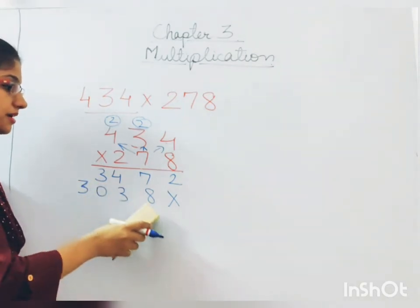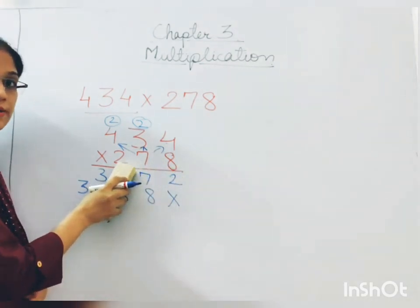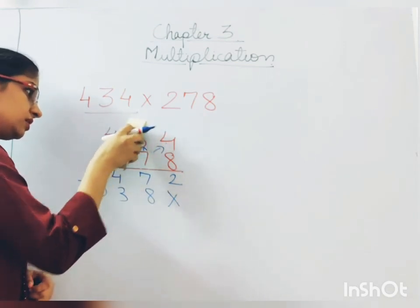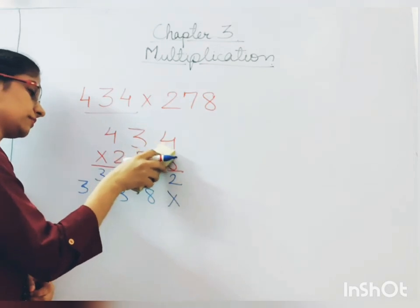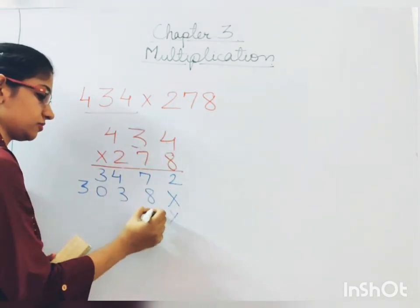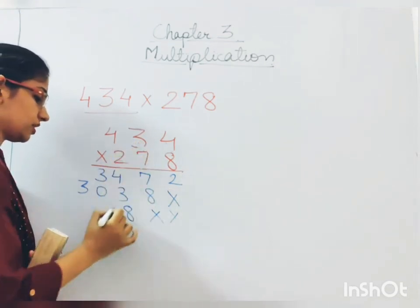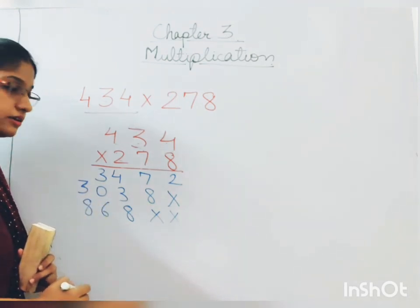Done. Done. Now you are done multiplication with 8 and 7. Now we have to do multiplication with 2. So erase the previous carryovers. Erase the arrows. And start again. So 2 4s are. 2 multiplication time. 2 4s are 8. 2 3s are 6. 2 4s are 8. Correct.